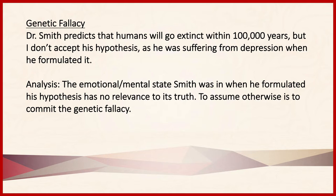The next fallacy of personal attack is abusive ad hominem. With abusive ad hominem, there's a direct attack against another person, and it generally involves some sort of name calling. In the evaluation of this fallacy, you should be able to explain how an arguer dismisses another's argument through name calling or through a personal attack, and note how this doesn't suffice. For example: I used to find her thoughts on string theory intriguing until I found out she's just some redneck. The arguer commits the fallacy of abusive ad hominem as he attacks the scientist for being a redneck — this is simply name calling and has no relevance to the evidence for or against the scientist's ideas on string theory.